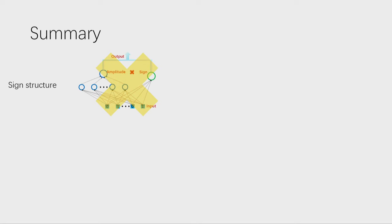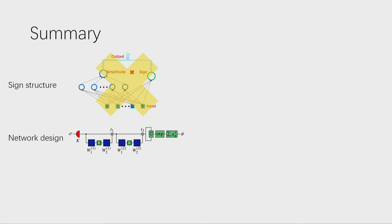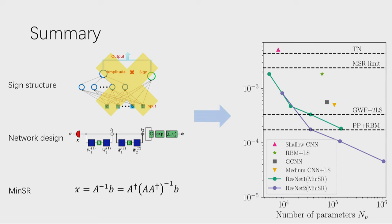In summary: during many years of studying neural quantum states, we gradually realized the previous choice of sign structure — separating amplitudes and signs — was not good. We learned better network designs and proposed the MinSR method, which allows us to train very deep neural quantum states. Based on all these improvements, we can now train a very deep network with one million parameters, obtain state-of-the-art accuracy, outperform existing methods, and do simulations on quantum spin liquids to produce interesting results.